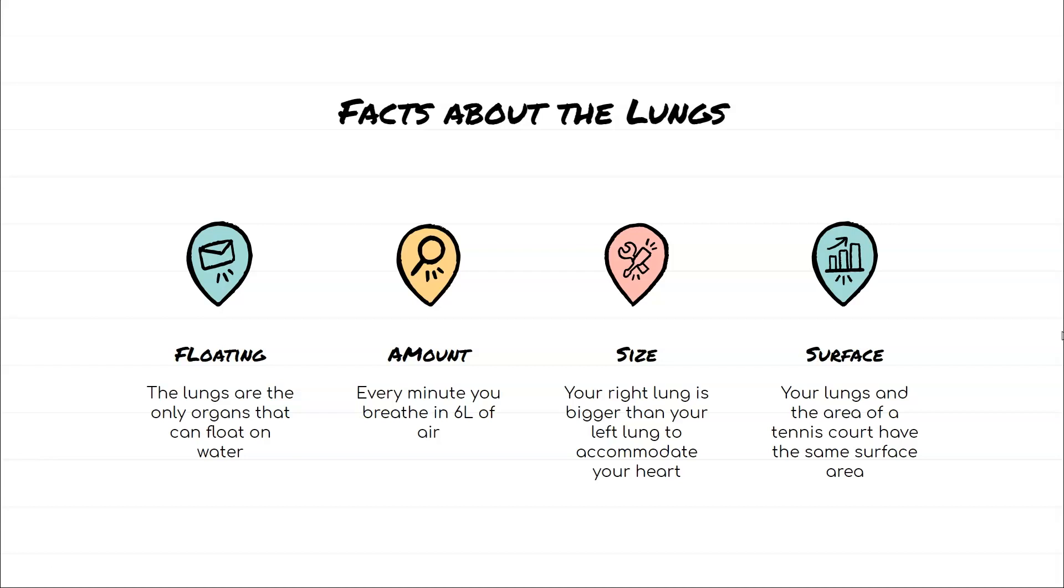Every minute you breathe in about six liters of air, so if you think about if you are a milk drinker or you drink two liters of pop, it's about roughly one and a half big jugs of milk. That's how much you breathe in every minute. Your right lung is actually bigger than your left lung to accommodate your heart, so your right lung actually has three lobes and your left lung only has two, and that's because your heart has to sit in there, so one lung is actually smaller than the other.